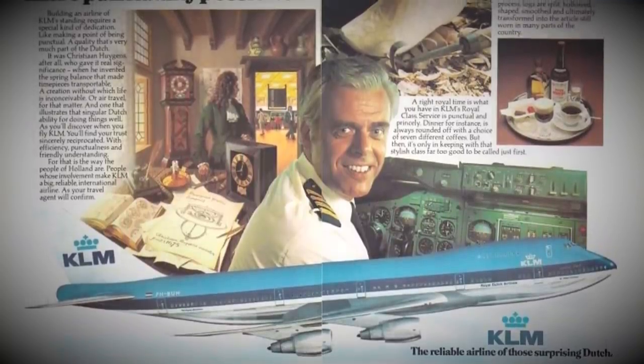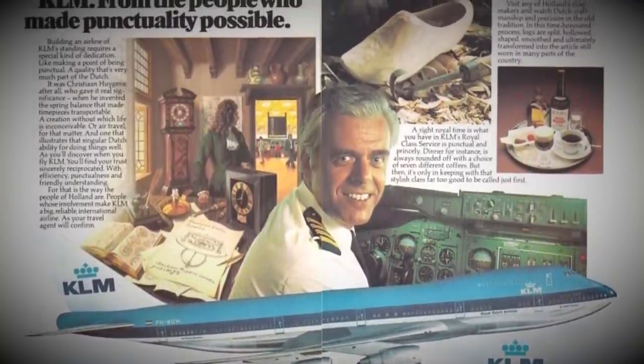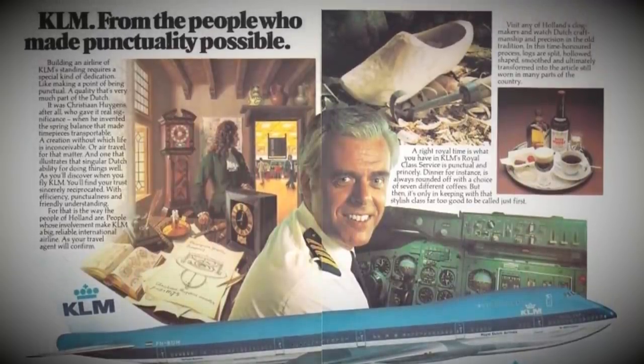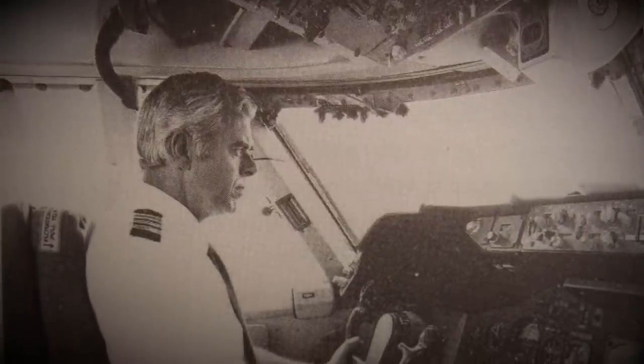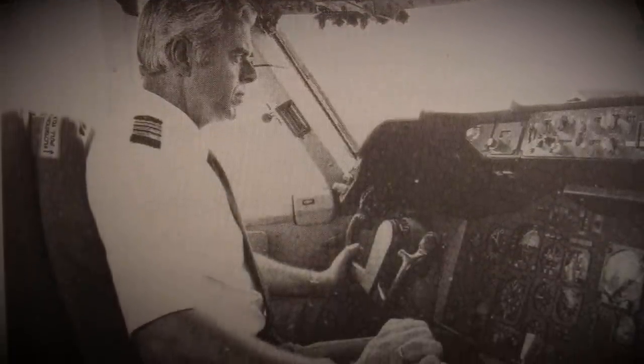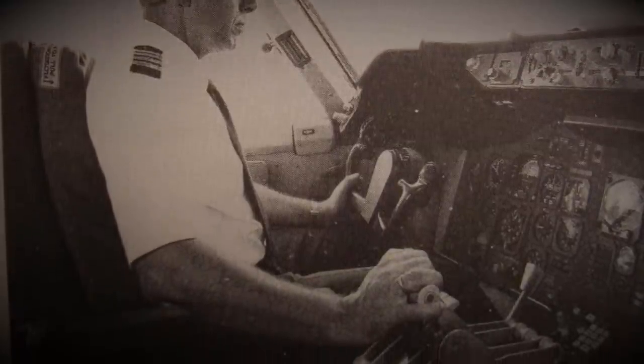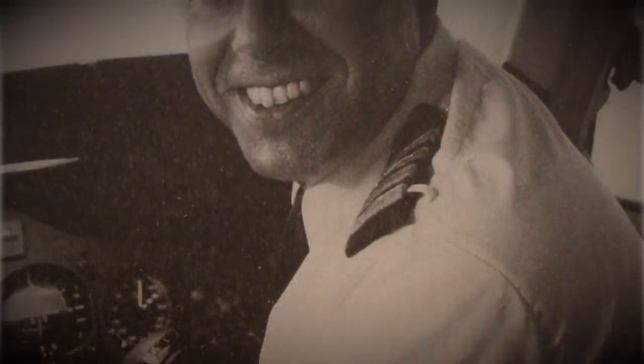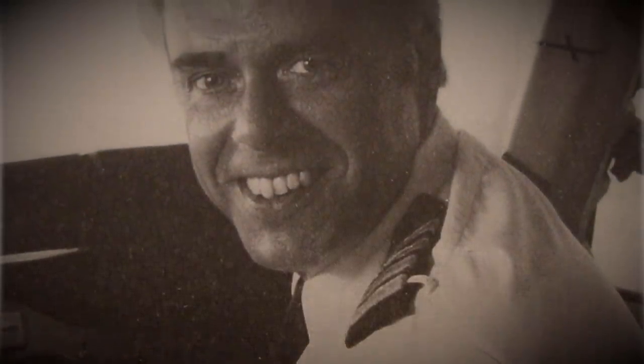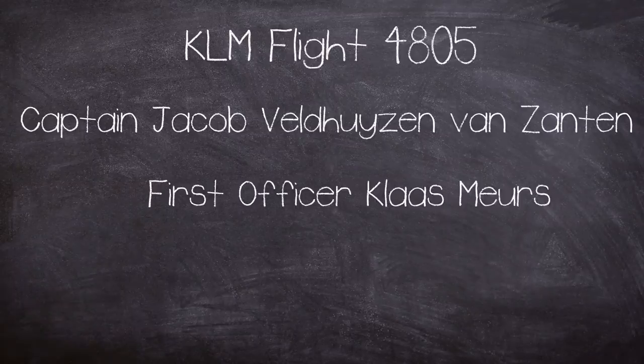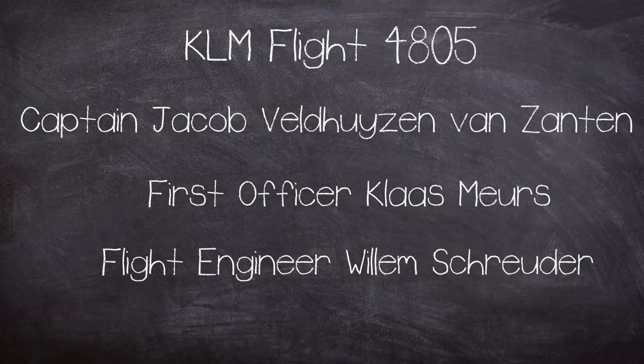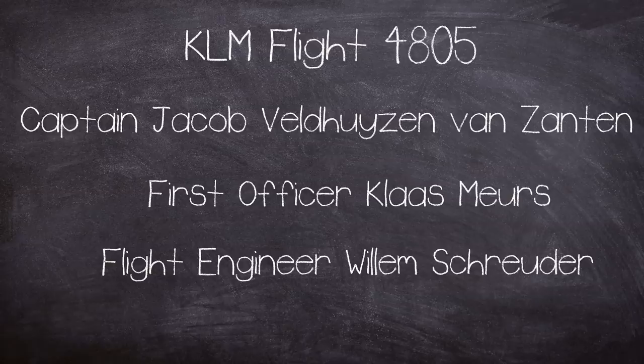Van Zanten was KLM's star pilot and head 747 training instructor. So much was his value to the company that his face was even on advertising material for the airline. His flying career started in 1947 when he gained his private pilot's license and by 1950 he had achieved his commercial certification and began working for KLM the same year. By 1977 he had amassed over 11,000 hours of flying time, 1500 of which were on the 747. Accompanying van Zanten on the crew of the KLM were First Officer Klaas Meurs and Flight Engineer William Schrader.